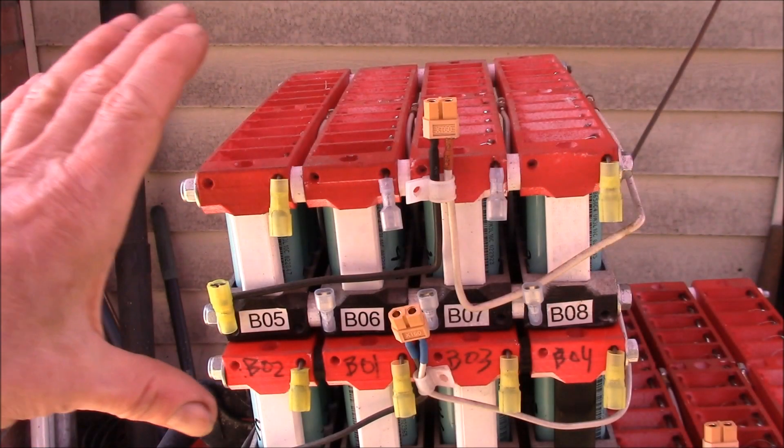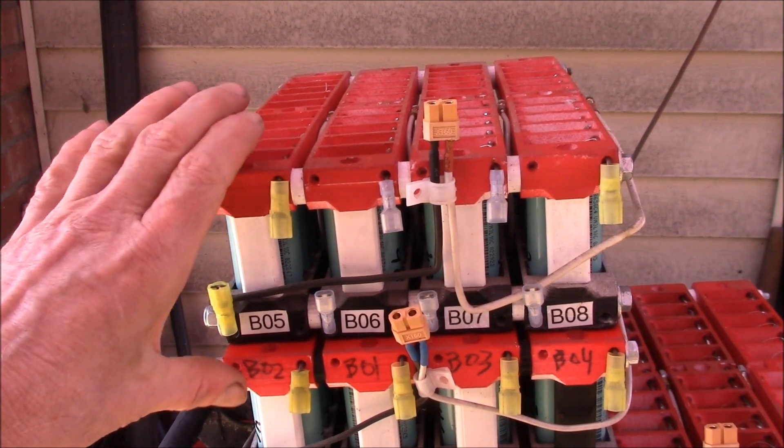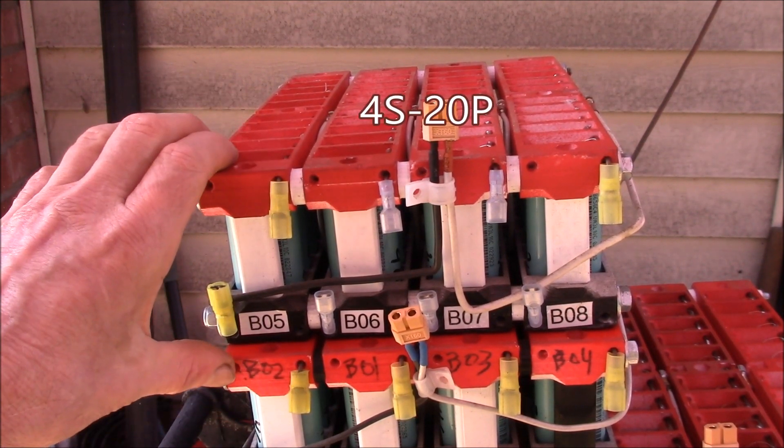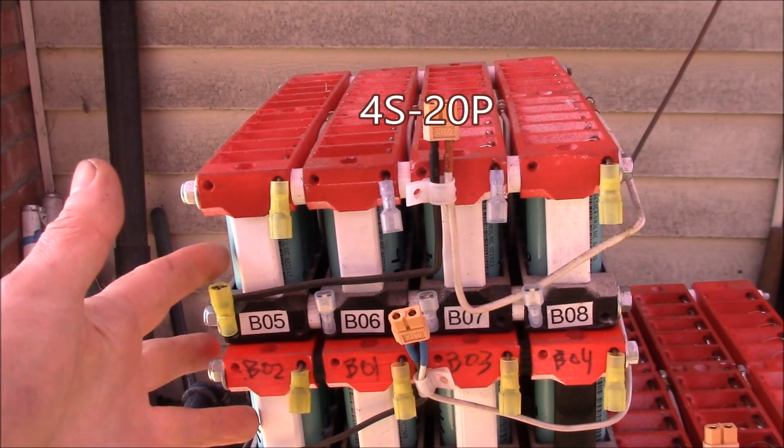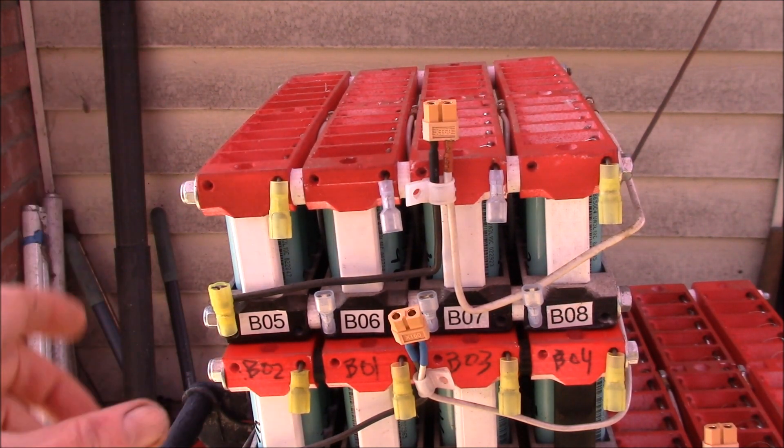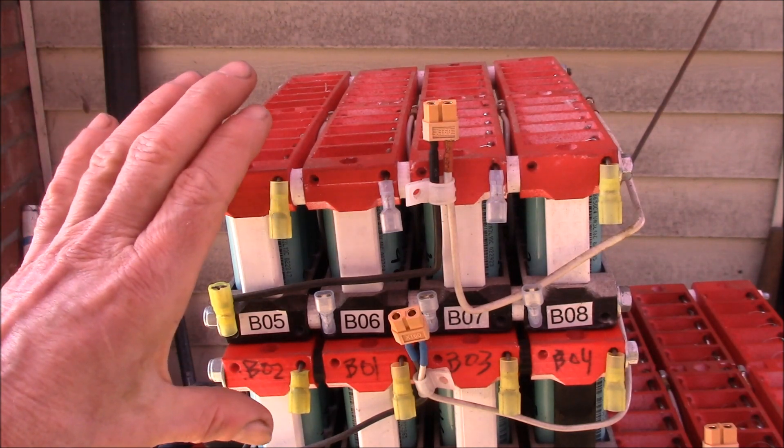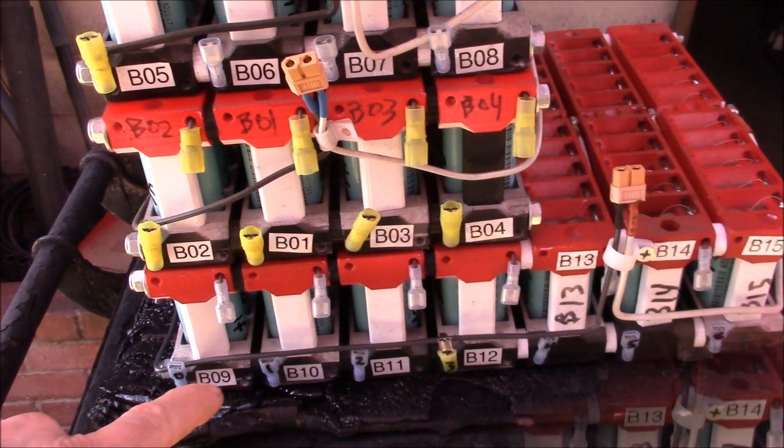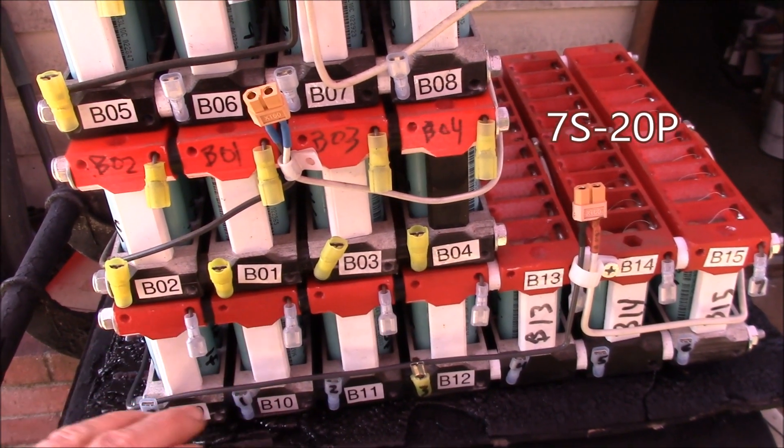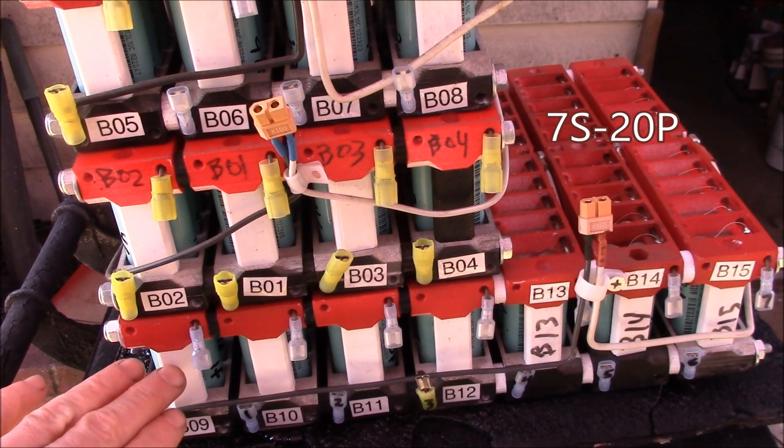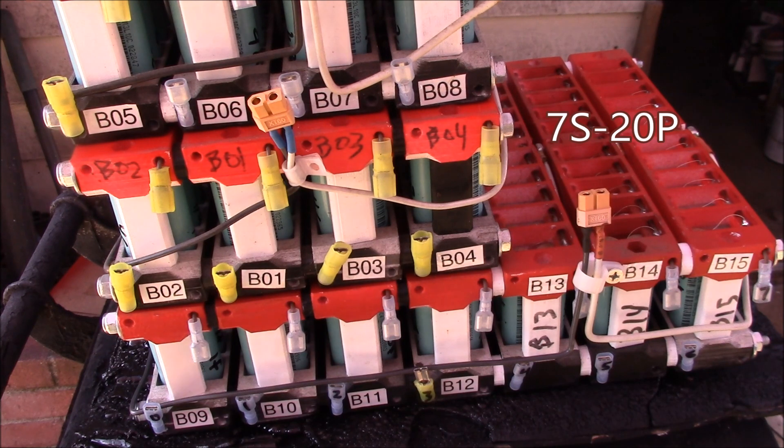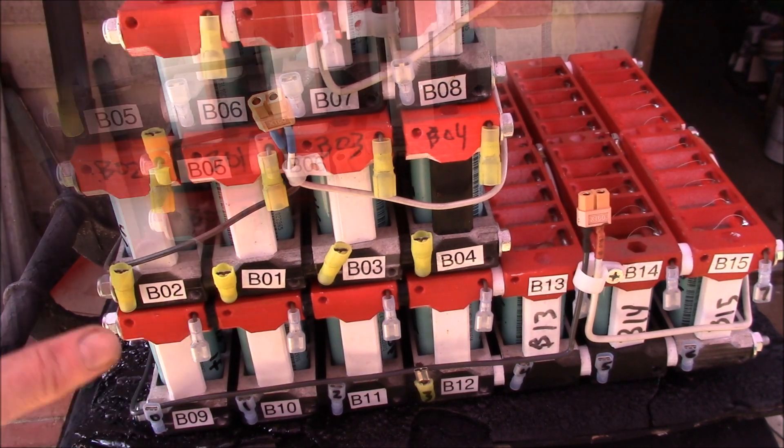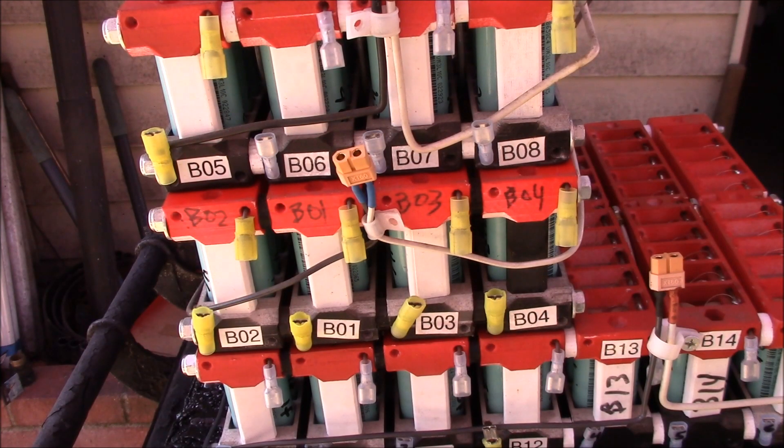Good morning YouTube, so here are two of my 4s or 16 volt lithium-ion battery packs. Each one is about a half kilowatt hour and I need to turn two of these into one of these. So this is a 24 volt 7s battery pack about 900 watt hours or 0.9 kilowatt hours.